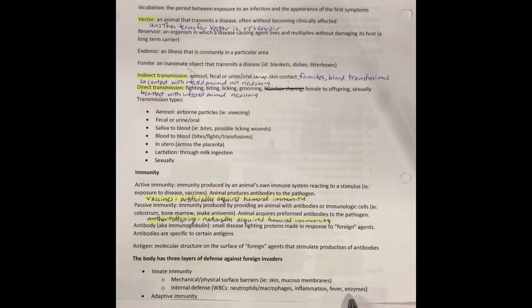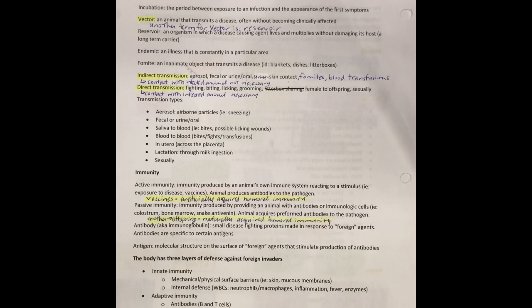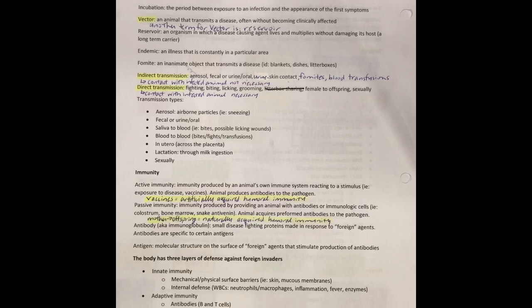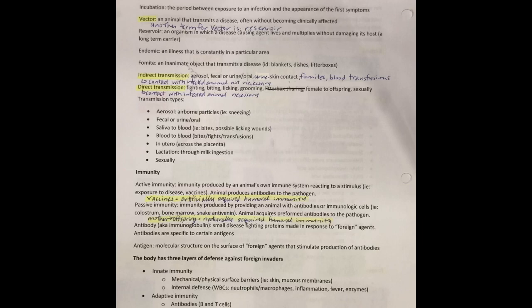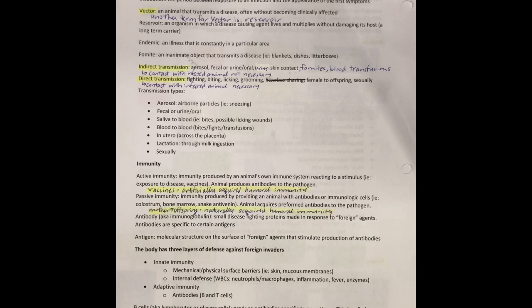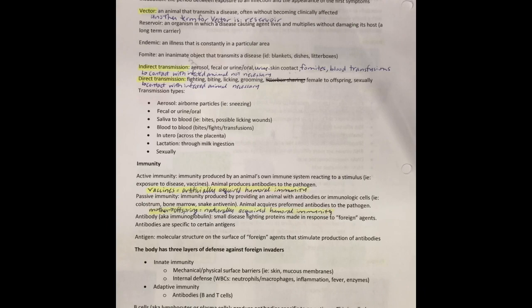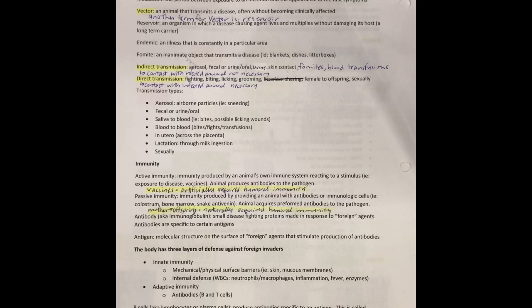Then we talk about adaptive immunity — and that's where our antibodies come in. There are two different types: B cells and T cells. B cells are called lymphocytes, a type of white blood cell, sometimes called plasma cells. These B cells produce antibodies, and those antibodies are specific to the antigen. This is called humoral immunity. The antibody has an antigen binding site — it's a specific shape and will only interact with the antigen that's the same shape.